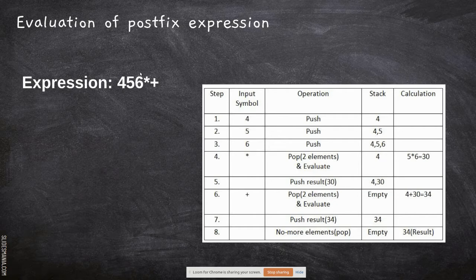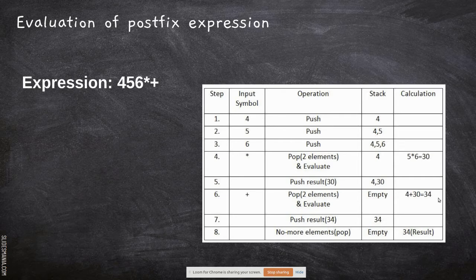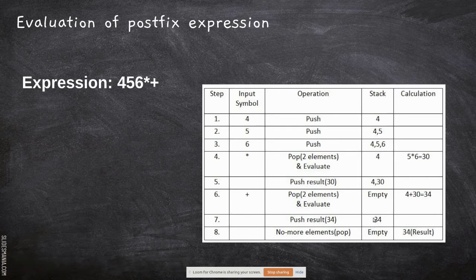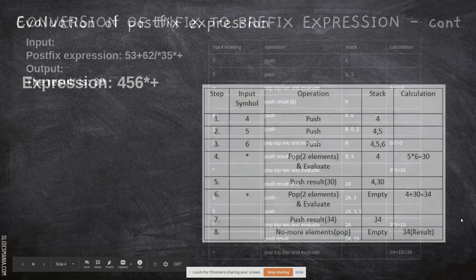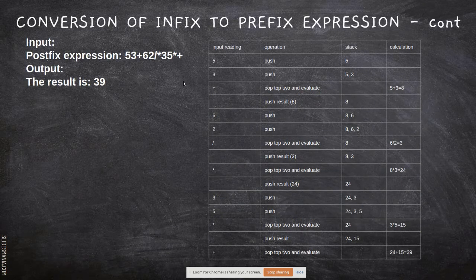After the multiplication, the result 30 is pushed back into the stack. Now the stack contains 4 and 30. The next character is +, an operator, so pop the top two elements — 4 and 30 — and perform addition: 4 + 30 = 34. The result is pushed back and then popped and printed as the final answer.